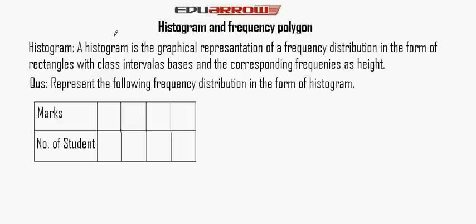In this chapter, first we read histogram. A histogram is the graphical representation of a frequency distribution in the form of rectangles with class intervals as bases and the corresponding frequencies as height. This definition is easily understood by this question: represent the following frequency distribution in the form of a histogram.